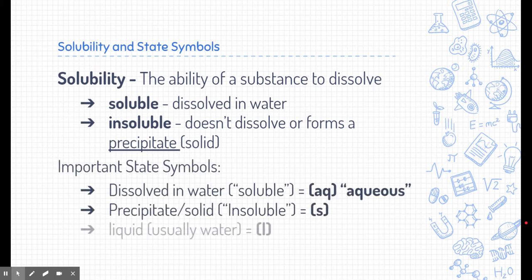We've also gone over a few state symbols shown next to chemical compounds inside chemical formulas. If a substance is able to be dissolved in water, it's soluble and we use the symbol (aq), meaning aqueous. If it forms a precipitate or a solid, we put a little (s), meaning solid — that means it's insoluble. Liquid, which is usually water, is (l). And if it's a gas, it's (g).